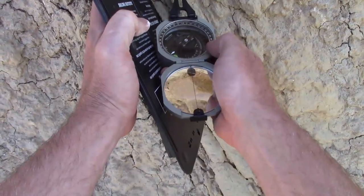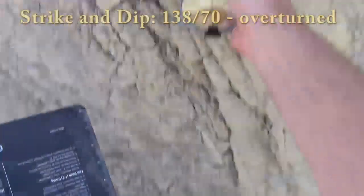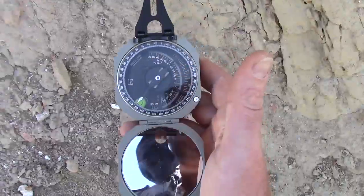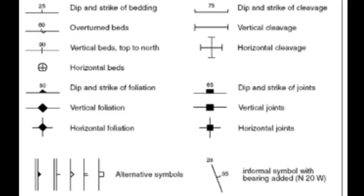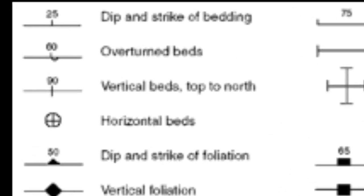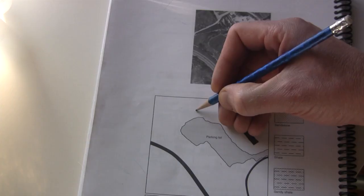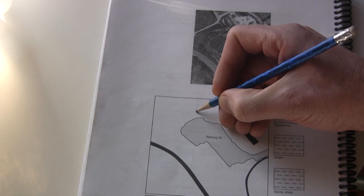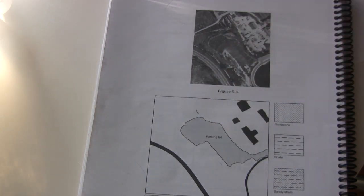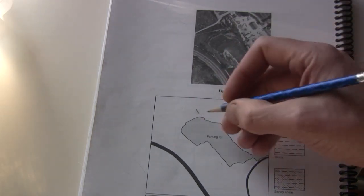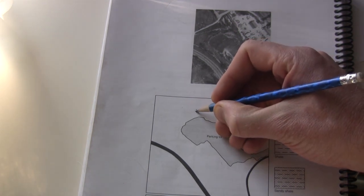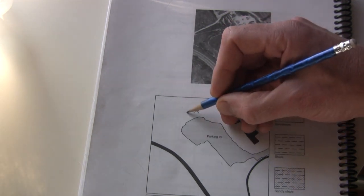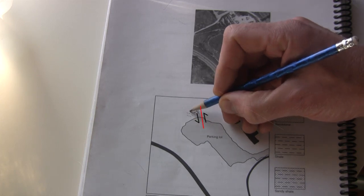Right-hand rule says take the strike into the face of the rock to get a strike of 138 and a dip of 70 degrees to the west. And recall this is overturned. The symbol for an overturned bed is a hook that ends up pointing in the observed direction of dip. Here our beds dip to the west and strike with a northwest-southeast trend, so we place a line closely perpendicular to this rock face for the strike, and then a dip line that loops back to the east and ends up pointing west. We write 70 at the end of this dip pointer.